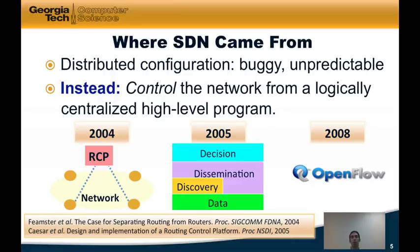Later, that architecture was generalized into something called the 4D architecture. In the 4D architecture, shown below, the data plane sits at the very lowest level and is responsible for forwarding network traffic. Sitting on top of the data plane are the discovery and dissemination planes.